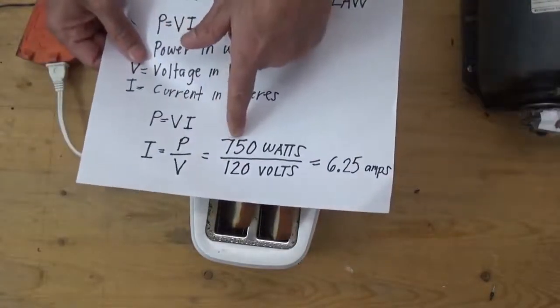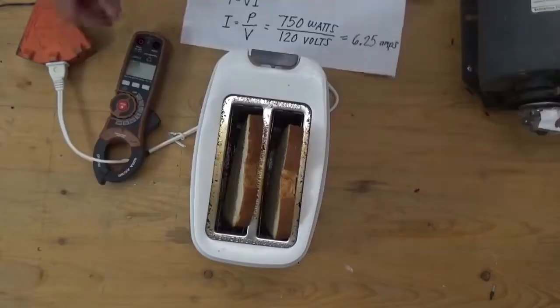We are going to get the current to see if the current is 6.25 amps. Because we have a power in watts, 750 watts over 120 volts. Let's prove it.